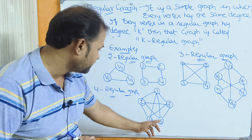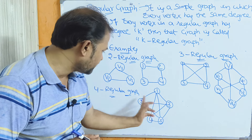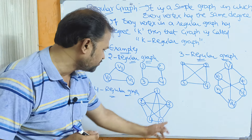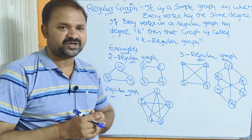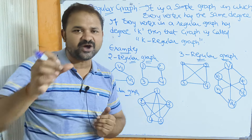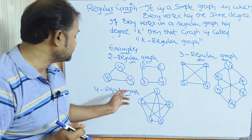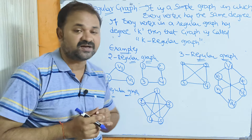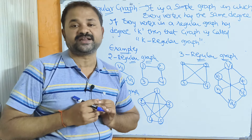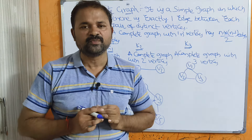If you take vertex 5, it also connects to 4 other vertices, confirming the degree of every vertex is 4. That is why this is an example of the 4-regular graph.